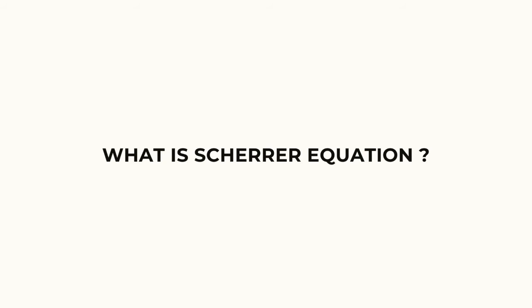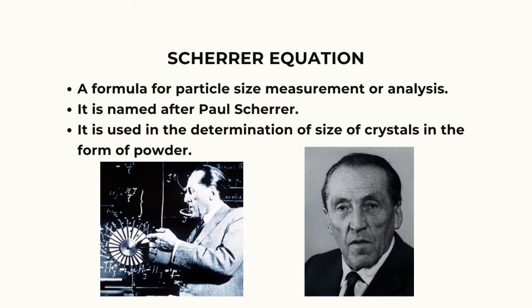What is Scherrer Equation? The Scherrer Equation in X-ray Diffraction and Crystallography is a formula that relates the size of submicrometer crystallite in a solid to the broadening of a peak in a diffraction pattern. It is often referred to, incorrectly, as a formula for particle size measurement or analysis. It is named after Paul Scherrer. It is used in the determination of size of crystals in the form of powder.